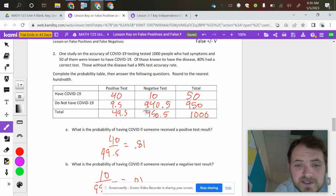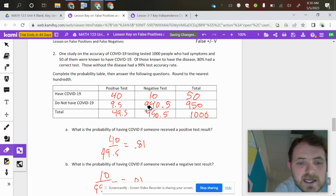So once we fill out the table there, again, I just added straight down, added straight down to get the total there. It says, what's the probability of having COVID if someone received a positive test result?